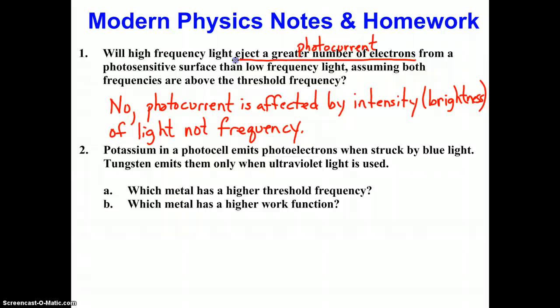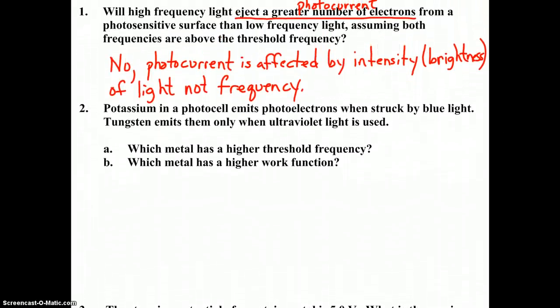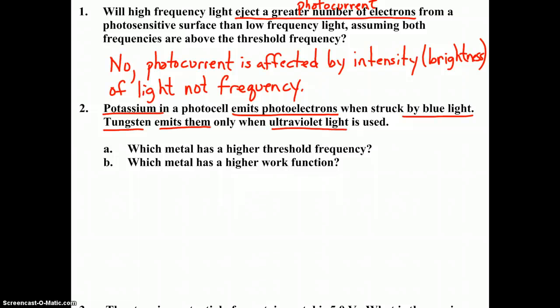Let's move on to question 2. Potassium in a photocell emits photoelectrons when struck by blue light. Tungsten emits them only when ultraviolet light is used. Part A: which metal has a higher threshold frequency? Is the threshold frequency greater for potassium or is it greater for tungsten?